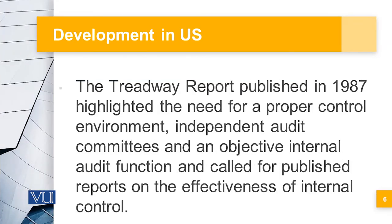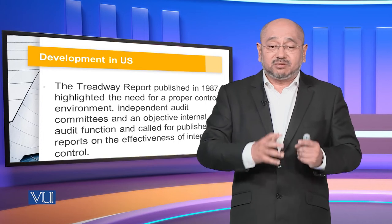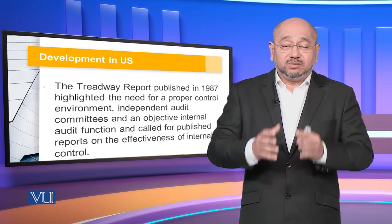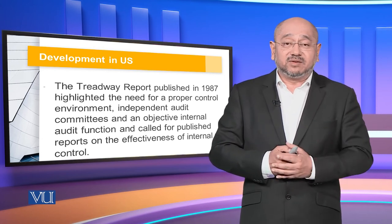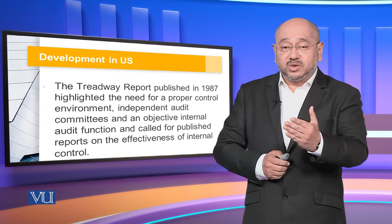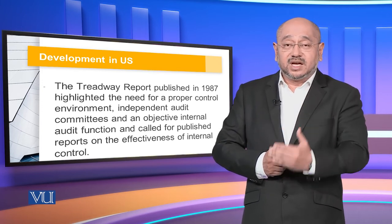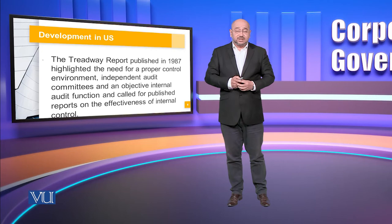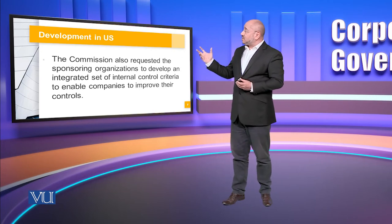The Treadway Report was published in 1987. It highlighted the need for proper control of the environment, including independent audit committees and an objective internal audit function, and called for published reports on the effectiveness of internal control. The environment of secrecy was replaced with an environment of openness, so that whatever financial audits would produce would be published as a report, giving everyone access to how the organization was working and what factors led to profits or losses.